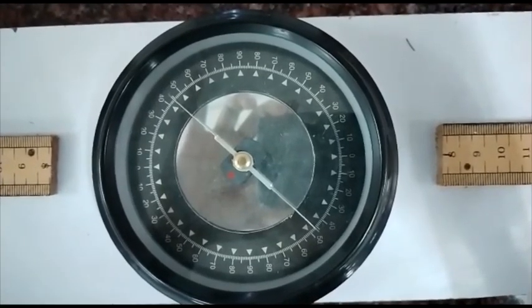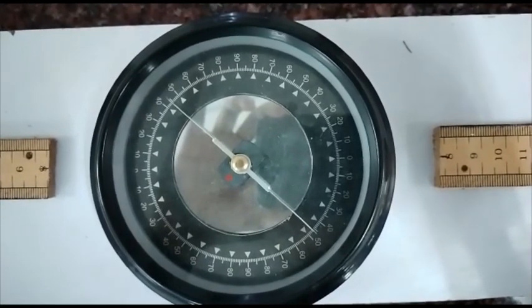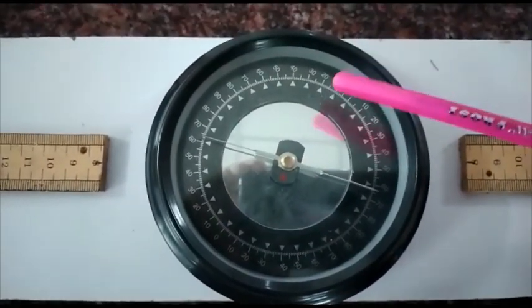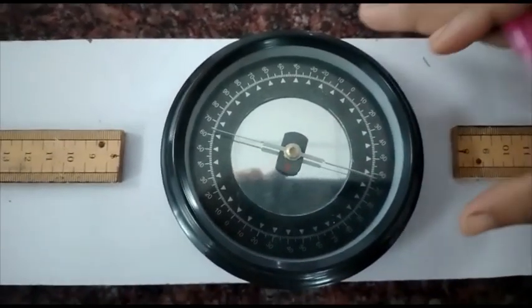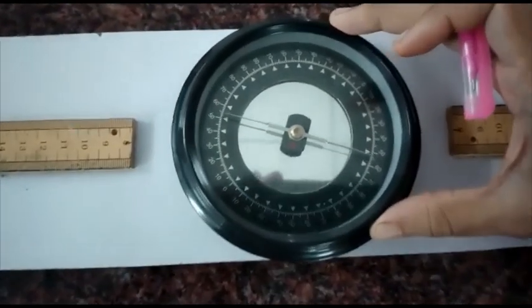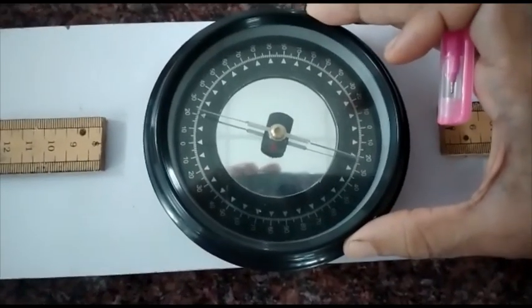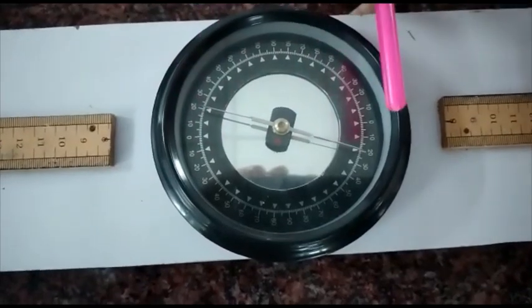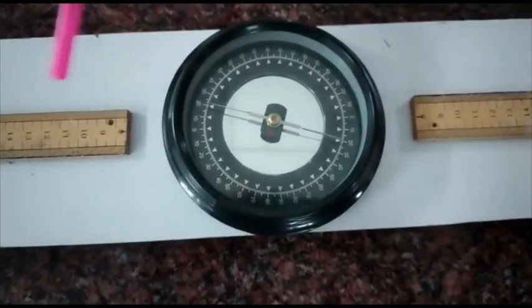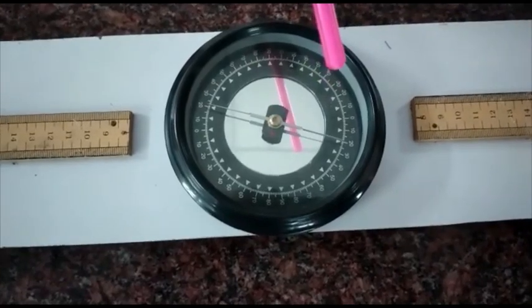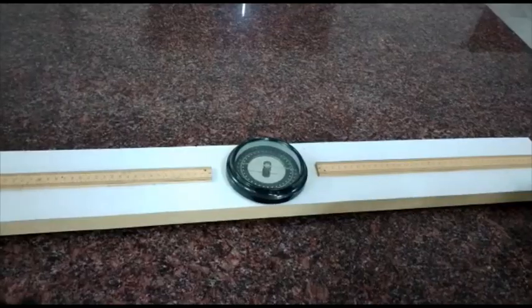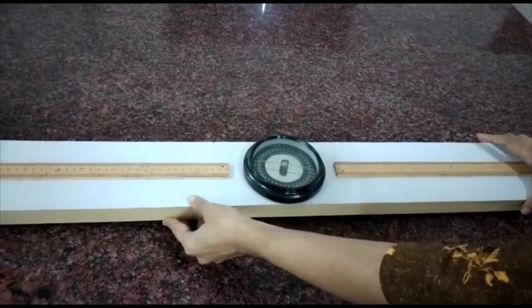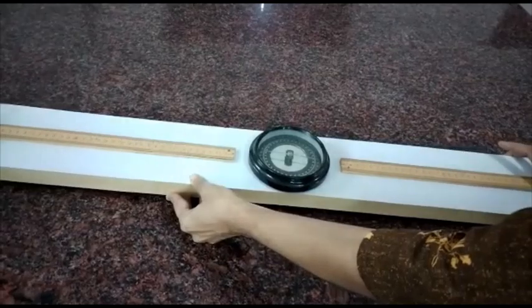This is the zero point for tan A position. We have to make this 0-0 parallel to the arms of the deflection magnetometer. Now rotate the deflection magnetometer as a whole so that the aluminum pointer reads 0-0.